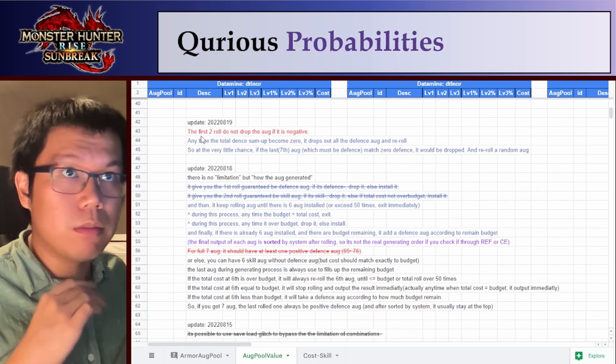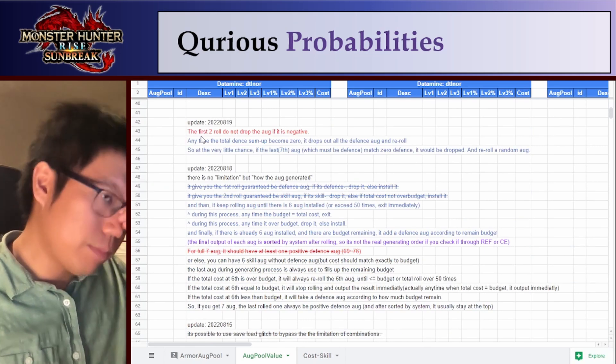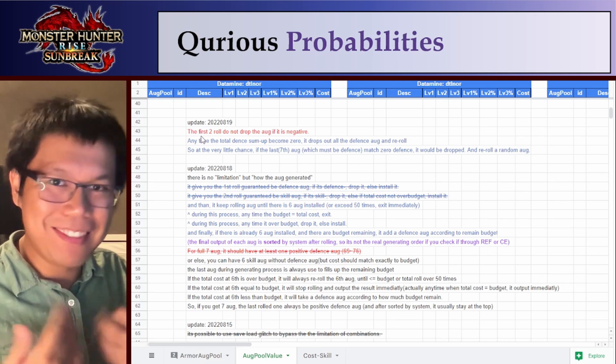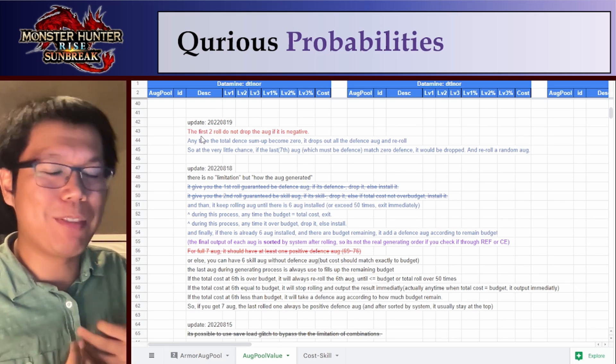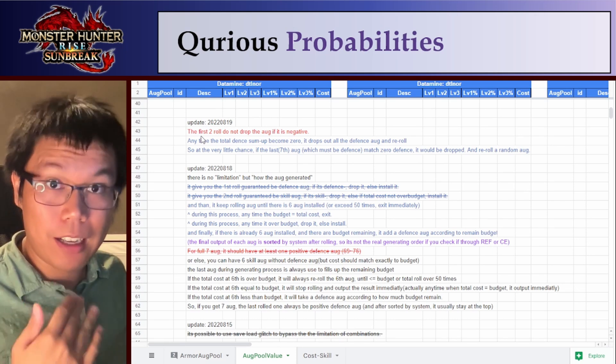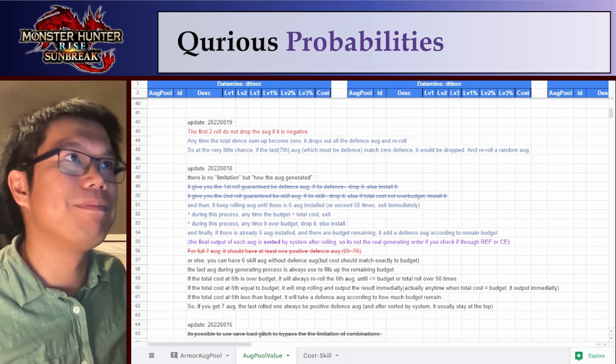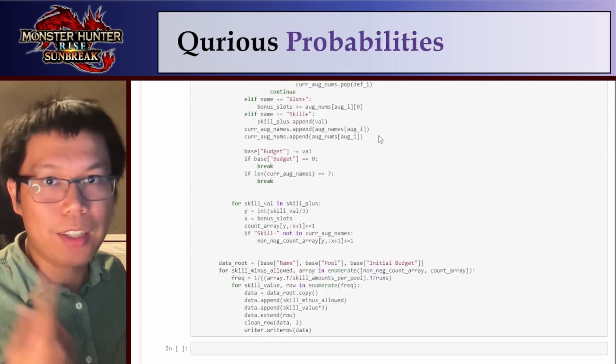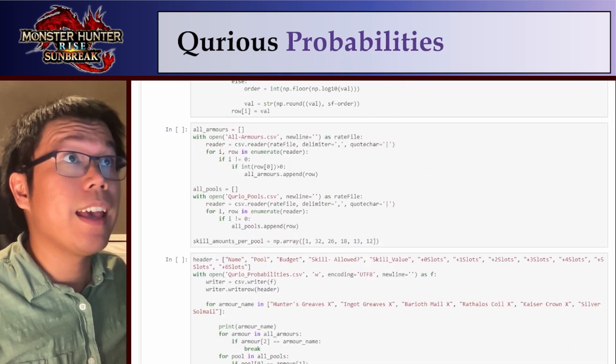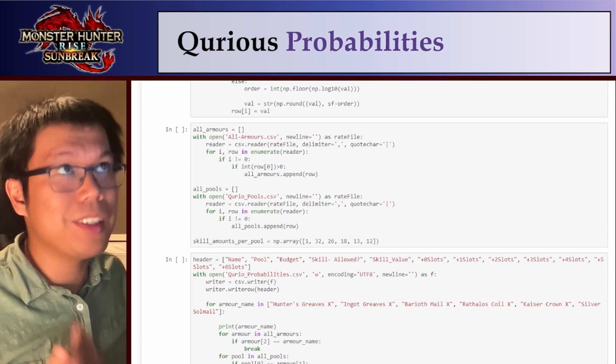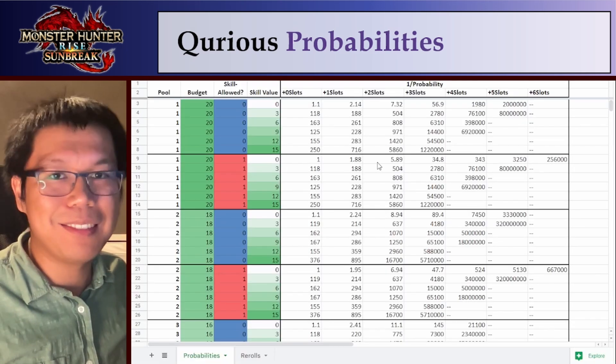Basically, the Tilnor also made what I call pseudocode. Basically, it's code that can't really be read by a computer, that can be read by a human for how the armor augments work. I took this pseudocode, I turned it into real code. I'll post this code as well.